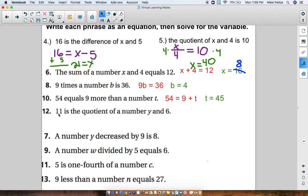Number 12. 11 is the quotient of a number Y and 6. So 11 is means 11 equals, and then we know quotient means division. So your equation should read 11 equals Y divided by 6. And then when you multiply that to do the inverse operation, you see that Y equals 66.